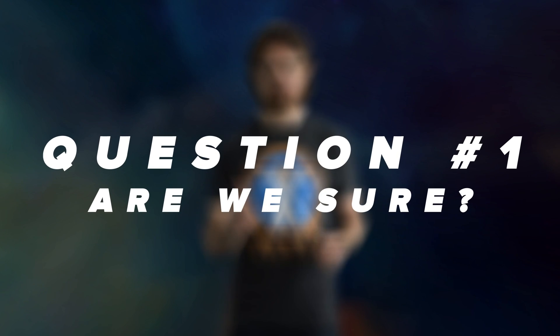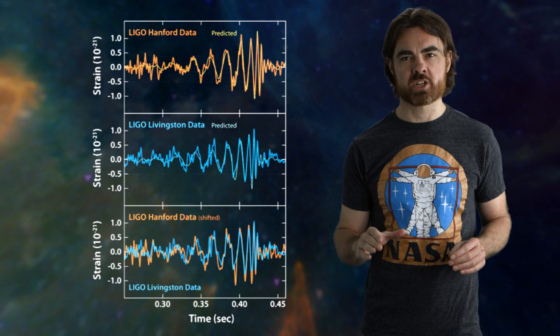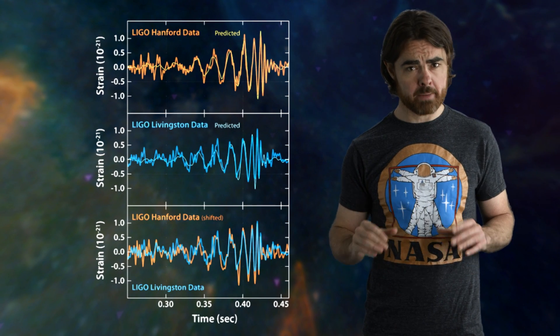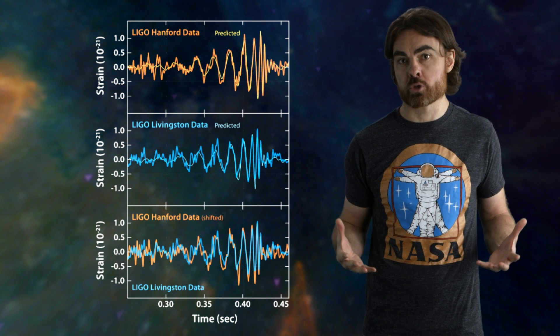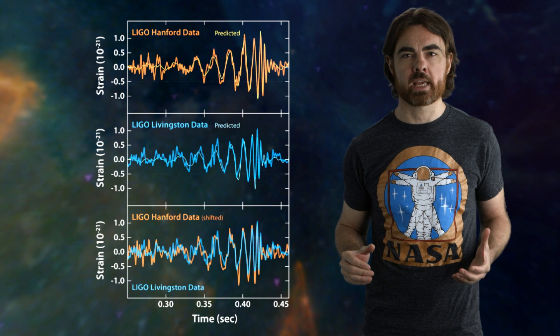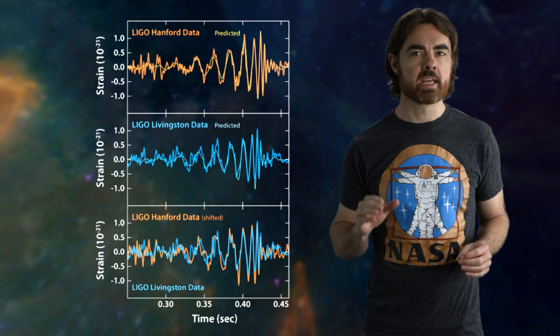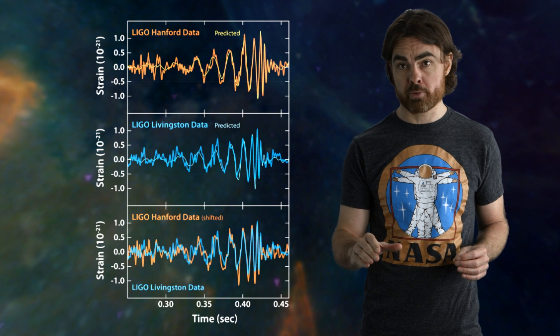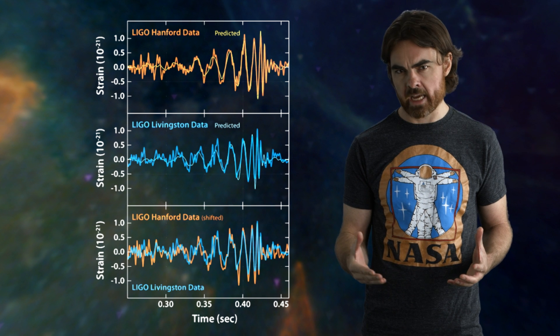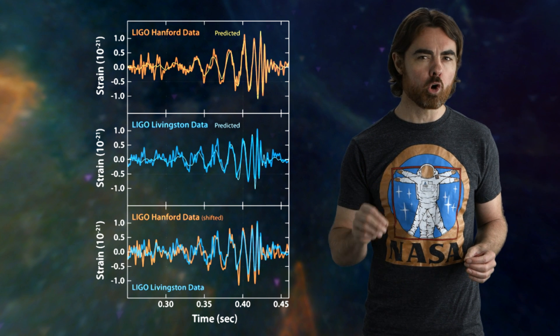Question number one. Are we sure? Well, the first detection in September was pretty unmistakable, even to the eye. The waveform looked just like what the researchers were expecting from theoretical calculations. A periodic change in interferometer arm lengths that increased in both amplitude and frequency as the black holes approached before dying away again after the merger.